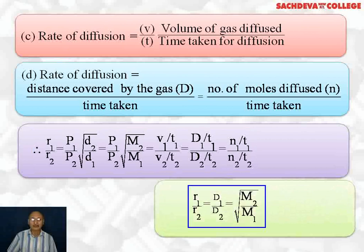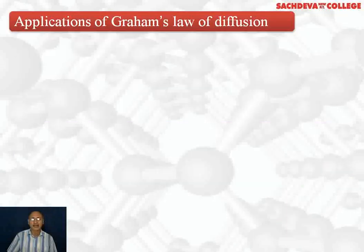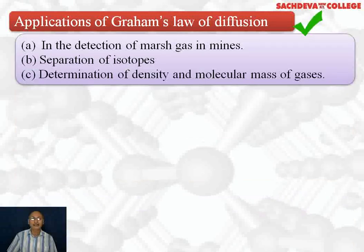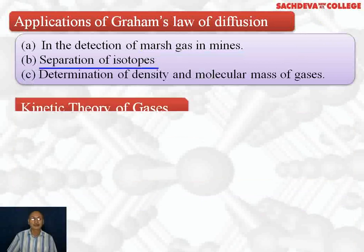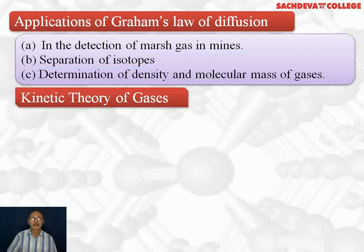We can also write R1 over R2, where rates are directly proportional to distance covered, equal to square root of M2 over M1. The applications of Graham's law of diffusion include: detection of marsh gas in coal mines, separation of isotopes, and determination of density and molecular mass of gases.